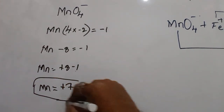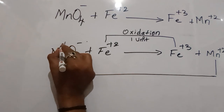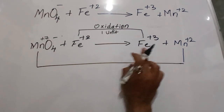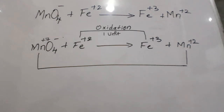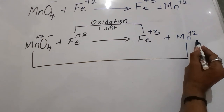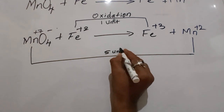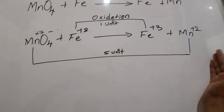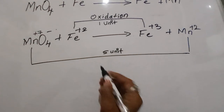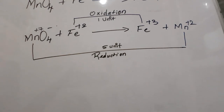Now, the oxidation state of manganese is plus 7. Fe2+ is converted into Fe3+, so the charge increases by 1 unit — that is termed as oxidation. Manganese goes from plus 7 to plus 2, meaning the charge is decreased by 5 units. When the charge decreases, it is termed as reduction.